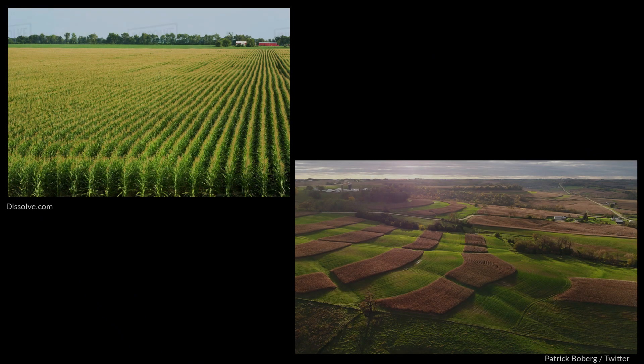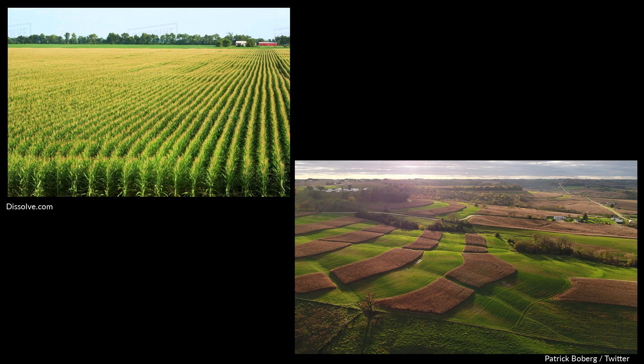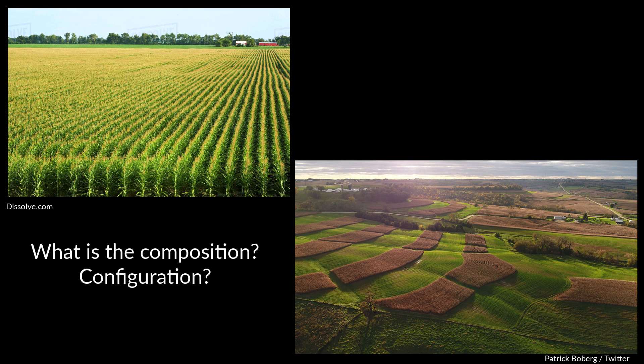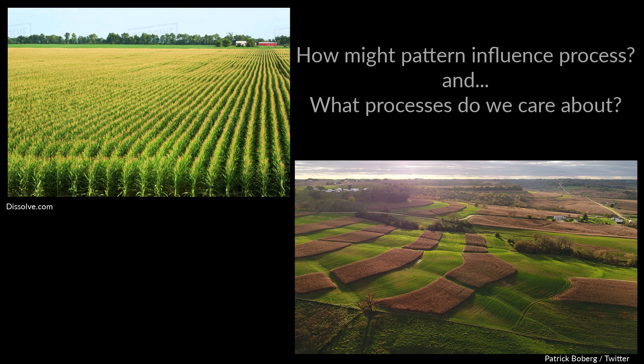Let's take a look at this final set of images — the cornfield on the left and the cornfields on the right. In some ways they're very similar: composition looks about the same between these two, but the configuration is very different. Now think about what processes we care about might be affected by the composition and configuration of this particular landscape and how that might affect agricultural production.